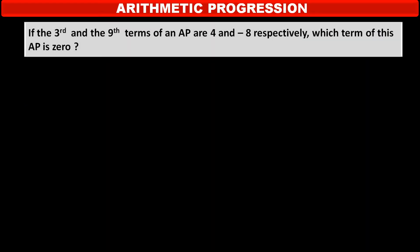If the third and the ninth terms of an AP are 4 and minus 8 respectively, which term of this AP is 0?